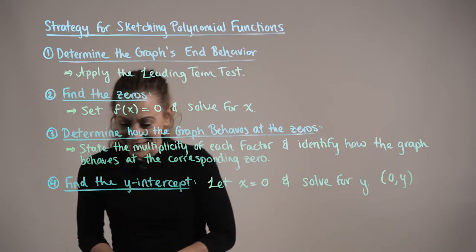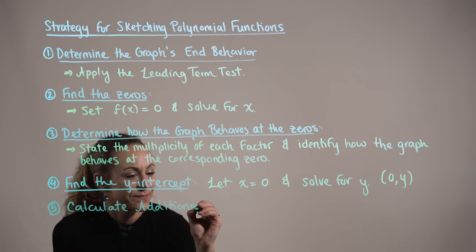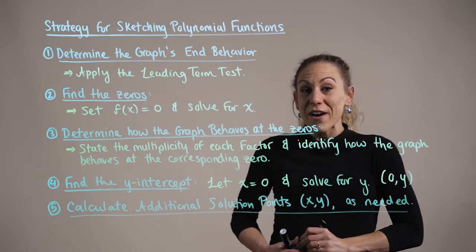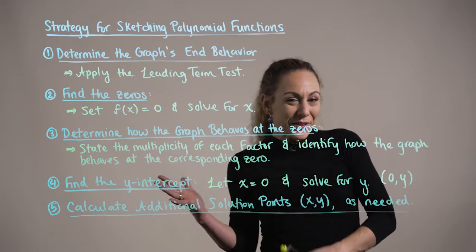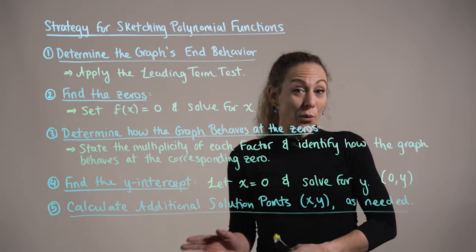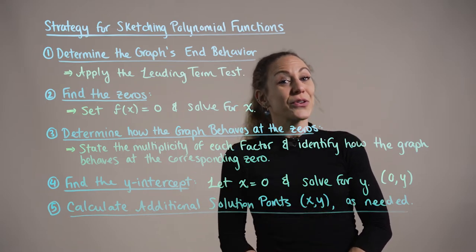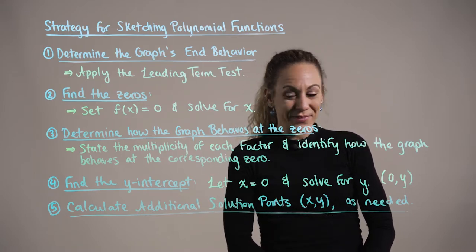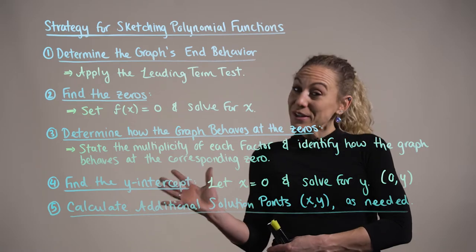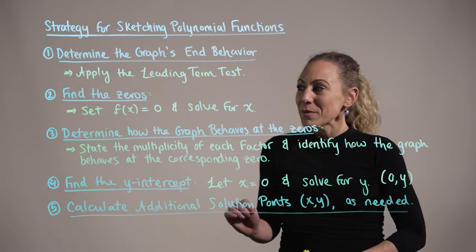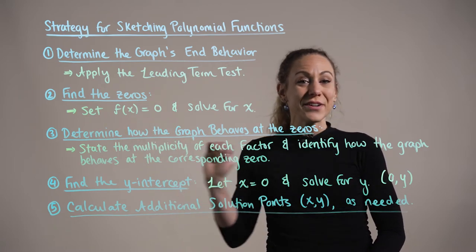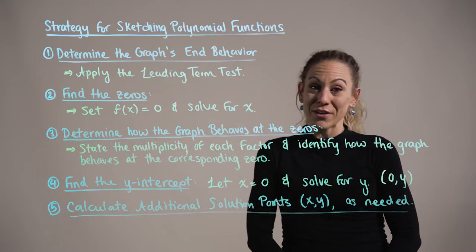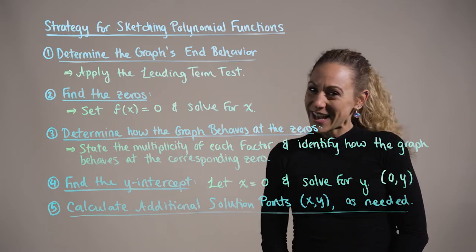Step five. In step five, we create a table of x and y values to calculate additional solution points or ordered pairs (x, y) on the graph of the polynomial function. When calculating such additional points, remember your zeros. Choose x values around the zeros to help make the most of your additional points.